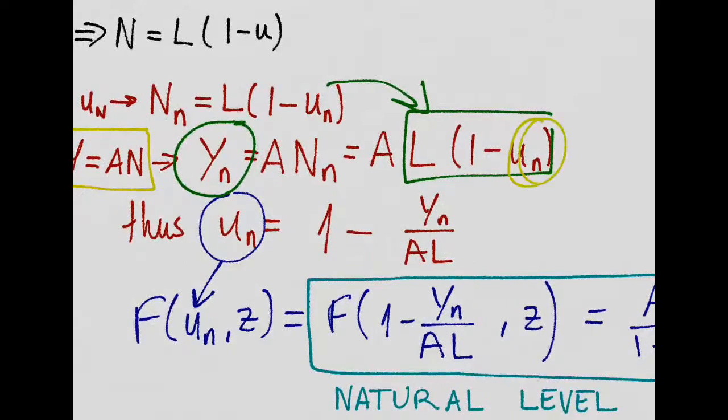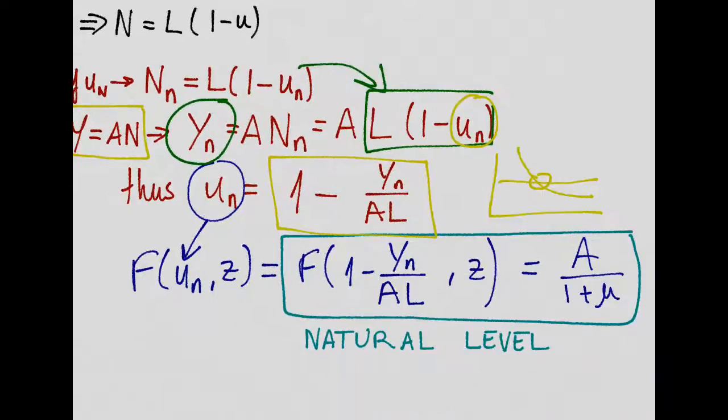Solving for the unemployment rate, we get this expression. And then, we plug it in in the equilibrium in the labor market. So, we can get a new expression in this wage setting as a function of the natural rate of output and, of course, C, which is just equal to our price setting. And this is just another way of looking at the labor market in terms of the natural level of output.